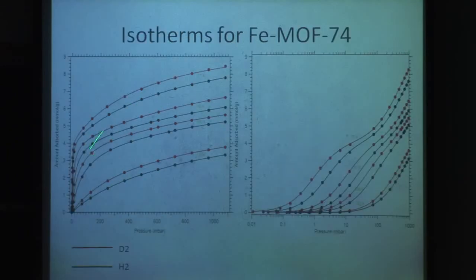So what does our data look like? This is the amount adsorbed as a function of pressure for various temperatures. Throughout the presentation, D₂ will be in red and H₂ will be in black. We weren't sure if this effect was going to be big enough to see, but as you can see, deuterium is adsorbed in larger quantities for all pressures and temperatures than hydrogen.